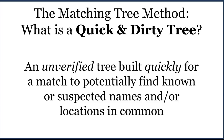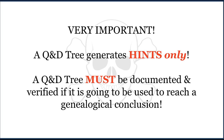Pursuant to this process, what you do is you will build a tree for a match in hopes of finding a common ancestor or location that will give you clues about how the two of you are related. It's really important to know, however, that a quick and dirty tree will only generate hints. A quick and dirty tree is not proof of anything. It has to be documented and verified if you're going to use it to reach a genealogical conclusion.